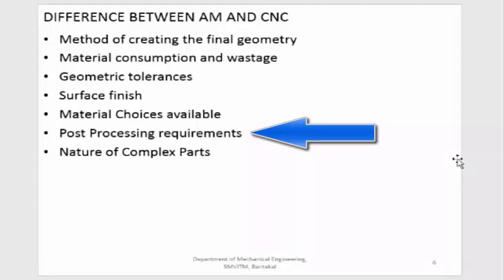The next difference is post-processing requirements — meaning what additional steps are required after creating the component. In CNC machining, the only post-processing usually required is removing sharp edges, sometimes done on the machine itself using a deburring tool. But in additive manufacturing, the component taken out will have many issues with surface finish, clearances, tolerances, and texture. The strength will also not be very good, so a lot of additional post-processing activities are required to improve strength, surface finish, and dimensional tolerances.